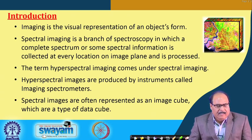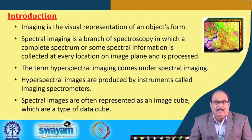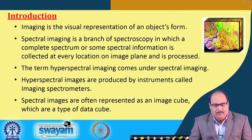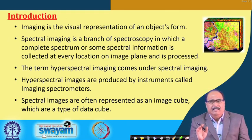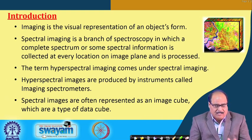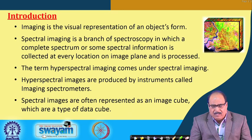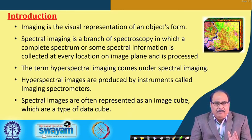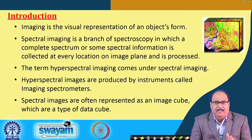As you can see in this slide, an image is the visual representation of an object's form. Spectral imaging is a branch of spectroscopy in which a complete spectrum or some spectral information is collected at every location on an image plane. The term hyperspectral imaging comes under the domain of spectral imaging, and hyperspectral images are produced by instruments called imaging spectrophotometers.